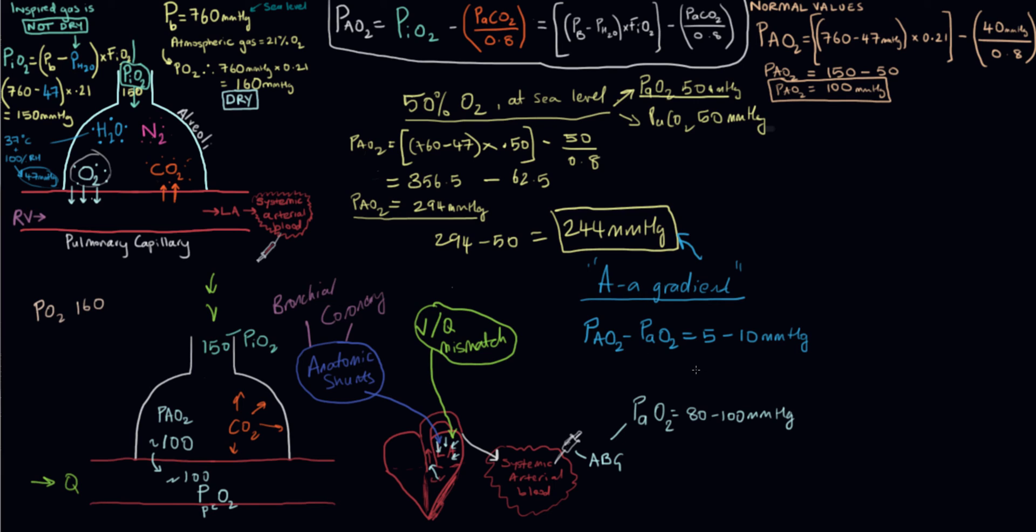There's a couple of things we need to mention. This 5 to 10 AA gradient for normal is based on someone breathing room air. This is someone breathing 21% oxygen. We also have a normal value if you're breathing 100% oxygen. If you're on 100% oxygen, that AA gradient should still be less than 65 millimeters of mercury.